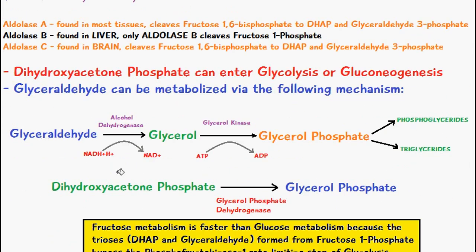Glyceraldehyde is converted into glycerol via the enzyme alcohol dehydrogenase, during which NADH is converted into NAD+. Glycerol is then converted into glycerol phosphate via the enzyme glycerol kinase, with the phosphate group coming from ATP, so ATP is converted into ADP.